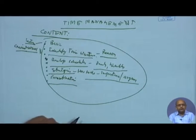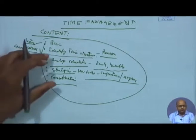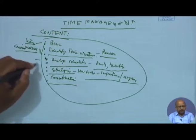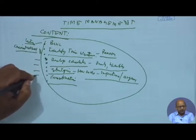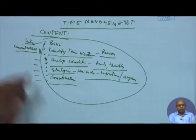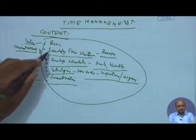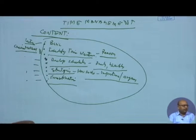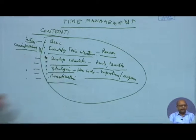You can also talk about procrastination — how to avoid procrastination, which is a delaying attitude. This is all part of the content. Once the content is identified, for each topic you decide what kind of methodology you are going to use to deliver it.